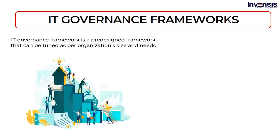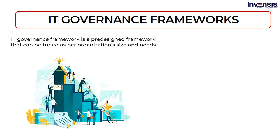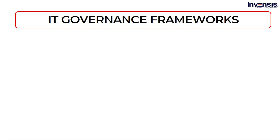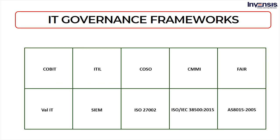IT governance framework is a pre-designed framework that can be tuned as per organization size and needs. IT governance framework provides best practices and controls to ensure they meet internal and external requirements of the organization. The different types of IT governance frameworks are: COBIT or Control Objectives for Information and Related Technologies; ITIL or Information Technology Infrastructure Library; COSO or Committee of Sponsoring Organizations; CMMI or Capability Maturity Model Integration; FAIR or Factor Analysis of Information Risk; VAL IT or Value from IT Investments; SIEM or Security Information and Event Management; ISO 27002 or International Organization for Standardization 27002; ISO/IEC 38500:2015, the international standard for corporate governance of IT; and AS 8015-2005, the Australian standard for corporate governance of information and communication technology.